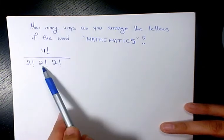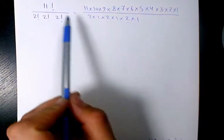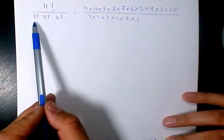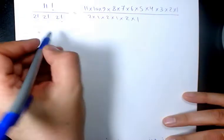So when you rearrange it, eleven factorial is going to be like this, and two factorial times two factorial times two factorial is going to be like what you see here.